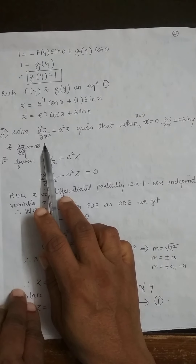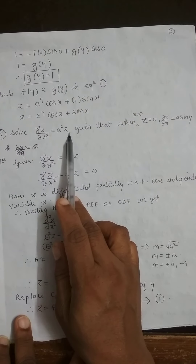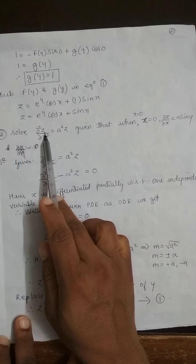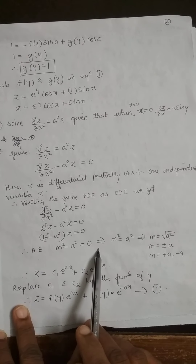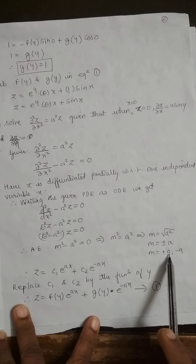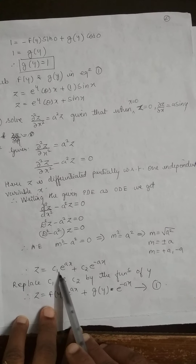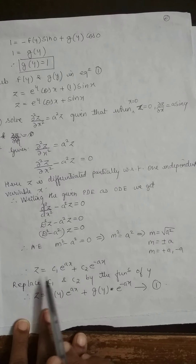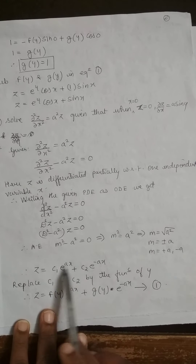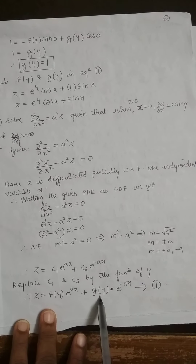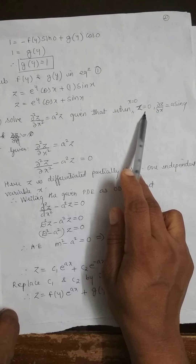Second problem: Solve ∂²z/∂x² = a²z, given that when x = 0, z = 0 and ∂z/∂x = a·sin(y). Rearranging to d²z/dx² − a²z = 0, the auxiliary equation is m² − a² = 0, giving m = ±a, which are real and different roots. So z = c₁eᵃˣ + c₂e⁻ᵃˣ. Replacing c₁ and c₂ as functions of y: z = f(y)eᵃˣ + g(y)e⁻ᵃˣ — equation 1.